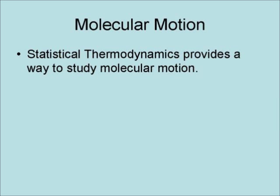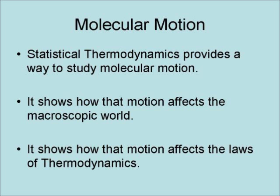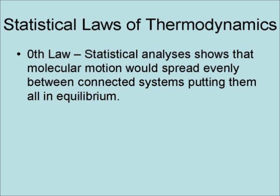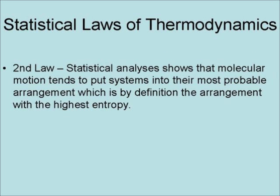Statistical thermodynamics provides a way to study molecular motion and shows how that motion affects the macroscopic world and the laws of thermodynamics. Statistical analysis of the zeroth law shows that molecular motion would spread evenly between connected systems, putting them all in equilibrium. Statistical analysis of the first law shows that molecular motion moves energy around without losing it. Statistical analysis of the second law shows that molecular motion tends to put systems into their most probable arrangement, which is, by definition, the arrangement with the highest entropy.